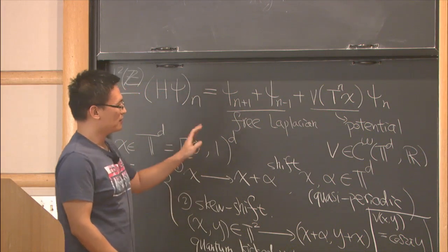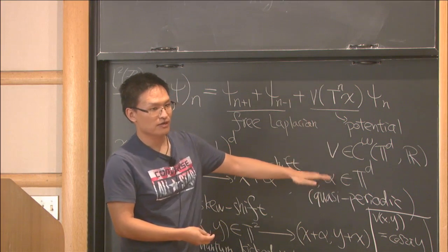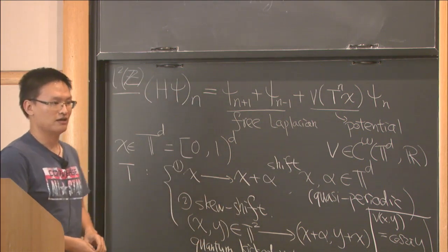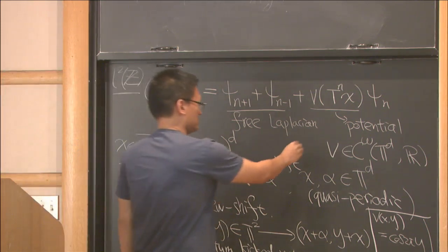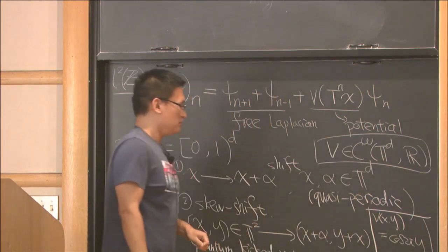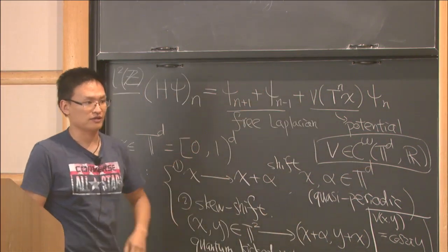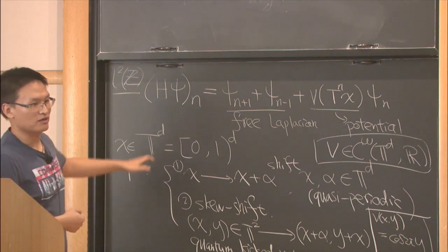There are some problems, there are some models with function v with very low regularity. For example, the Fibonacci Hamiltonian, but today I will focus on the analytic case. So since v is real valued, then this is a self-adjoint operator. We want to study what is the spectrum of this operator like.